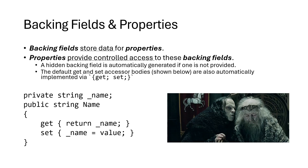The first thing I want to look at is a backing field and how it relates to a property. Commonly in your classes and hobby-level programming, you'll just use a property 99% of the time, and backing fields are not always something you'll manually specify. What a backing field is, it essentially lets us store data for something called a property. Think about the properties like we saw last week — those are the public string name with that get and set thing afterwards. That notation is a property.